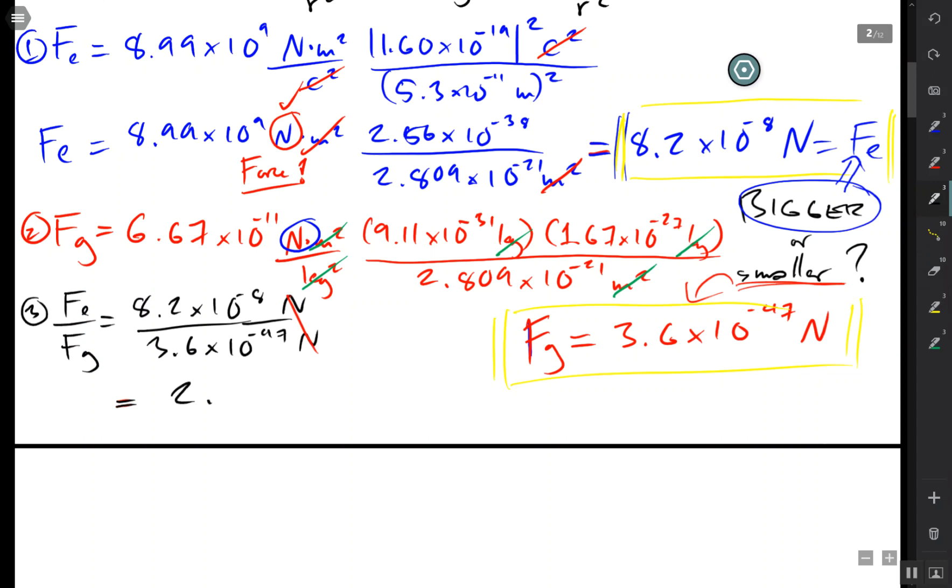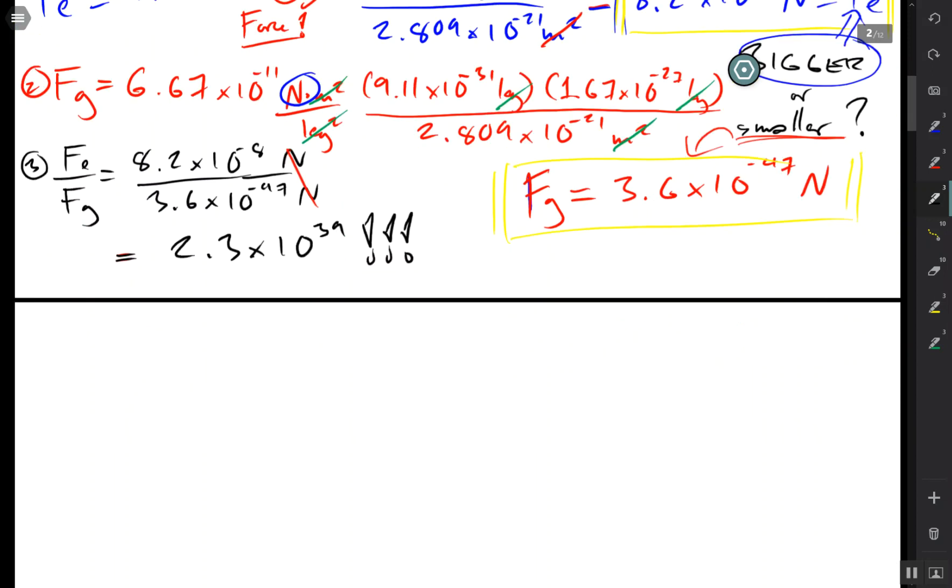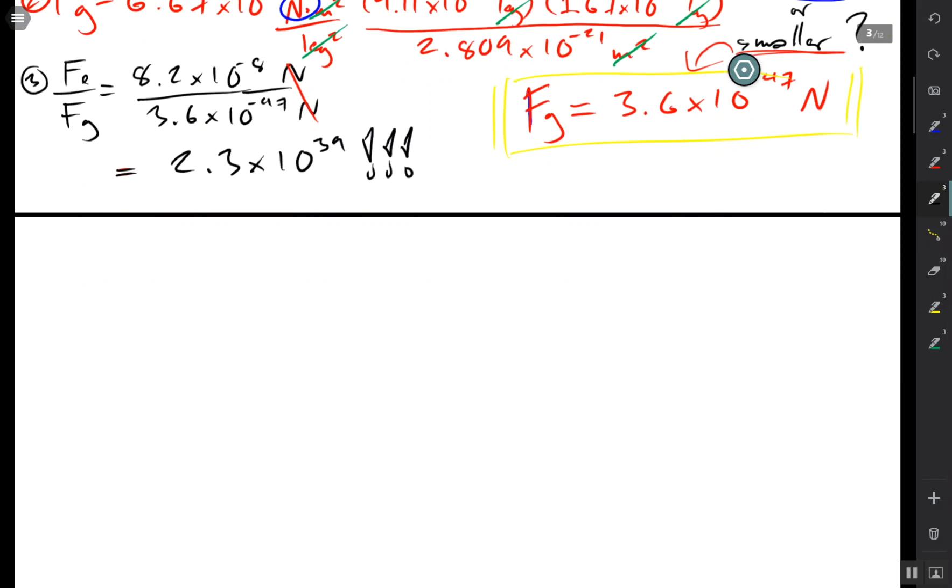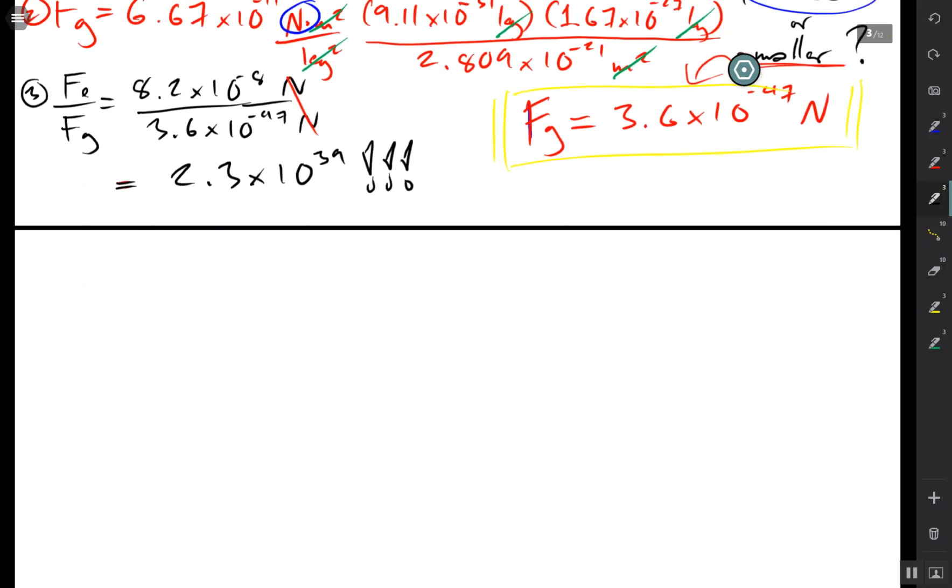And what number does that give us? This gives us a number of a whopping 10 to the 39. Now if you had that much money in the world, people couldn't spend it all in their entire lifetimes. Something close to Avogadro's number like that. But we're not done yet.